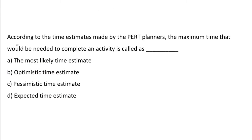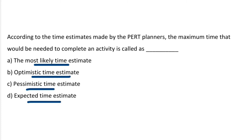Next question: according to the time estimates made by the PERT planners, the maximum time that would be needed to complete the activity is called — Option A: Most likely time estimate. Option B: Optimistic time estimate. Option C: Pessimistic time estimate. Option D: Expected time estimate. The correct answer is option C, Pessimistic time estimate.